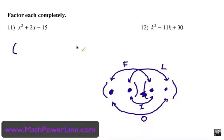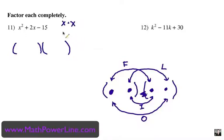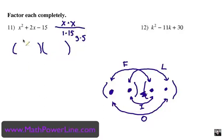Let's take that concept and factor number 11. X squared is X times X — there's only that one way to make X squared. And 15 could be made a number of different ways: 1 times 15, or 5 times 3. The first part's easy: if I put an X there, I have to put a single X there because X times X is X squared.